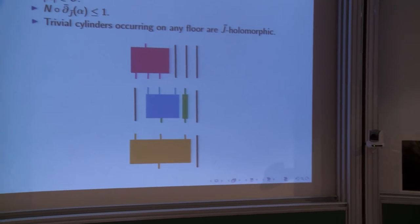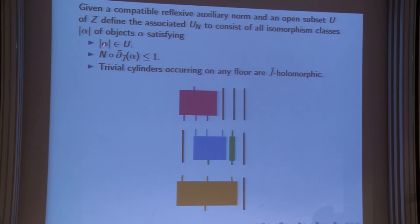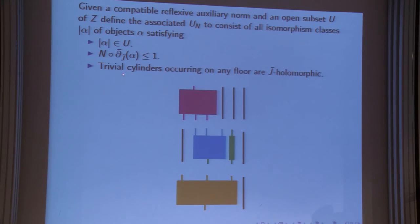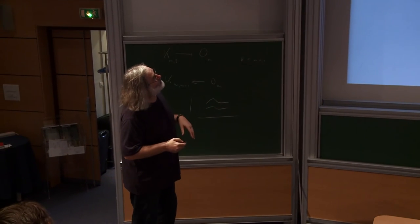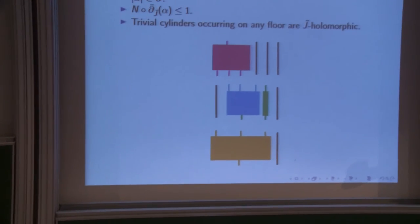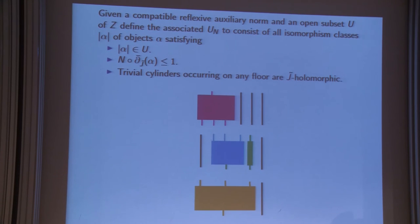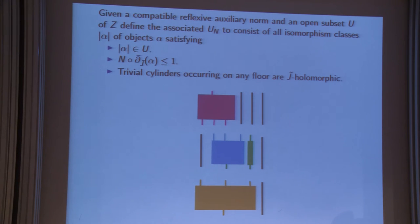You have an open subset of isomorphism classes of objects and an auxiliary norm. Associated to this open set, you just take all objects in this open set for which the trivial cylinders on every floor are J-holomorphic — if you apply the D-bar, there's no contribution from a trivial cylinder — then you apply n, and it should be less or equal to 1. U is open; U_N is not open. The perturbations will precisely produce that, since I will never perturb over the cylinders.